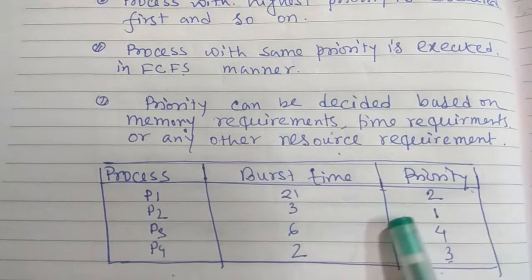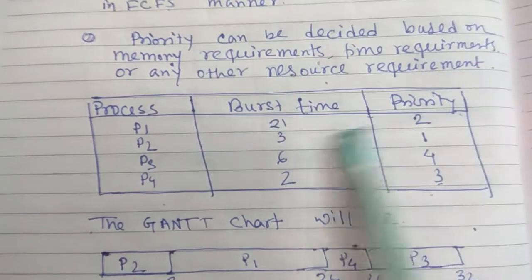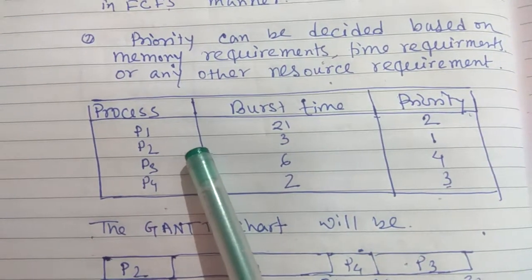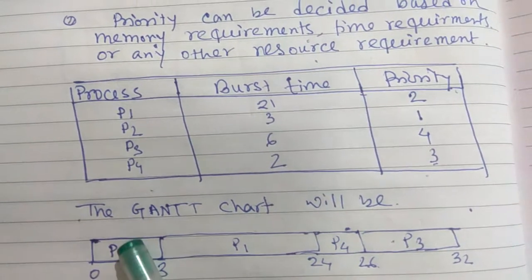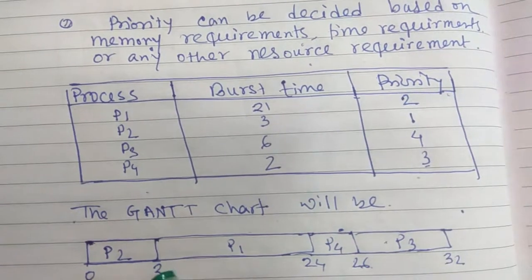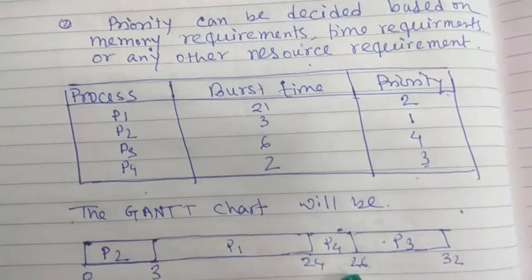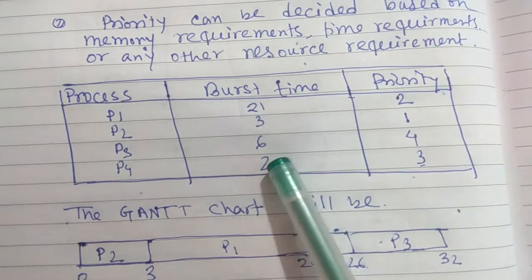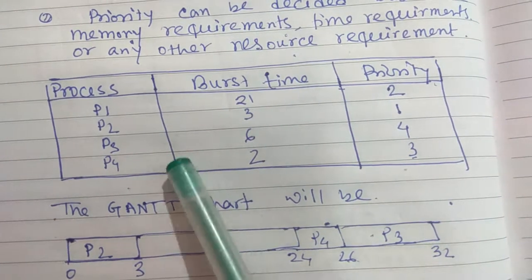Here the highest priority process is P2, with priority 1 — priority 1 is the highest. So P2 will be executed first, from 0 to 3. Then the process with priority 2 will be executed from 3 to 24. Then P4 with priority 3 will be executed up to 26, and finally P3 with priority 4 will finish at 32.